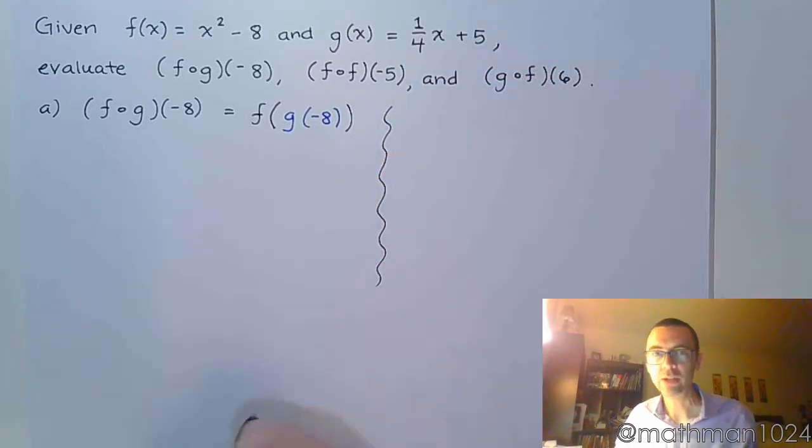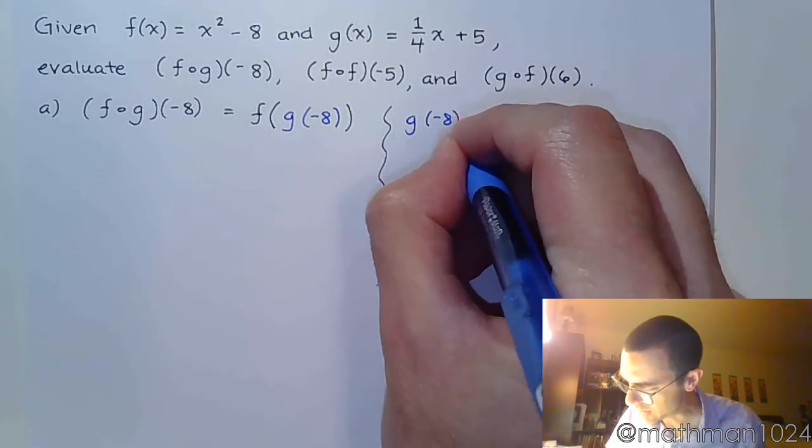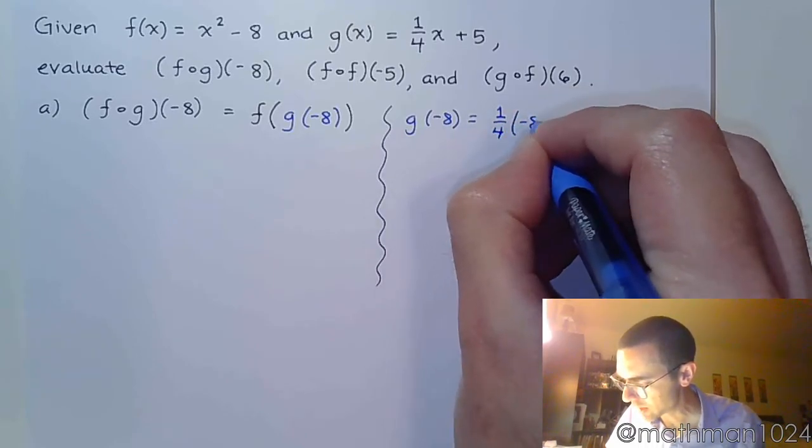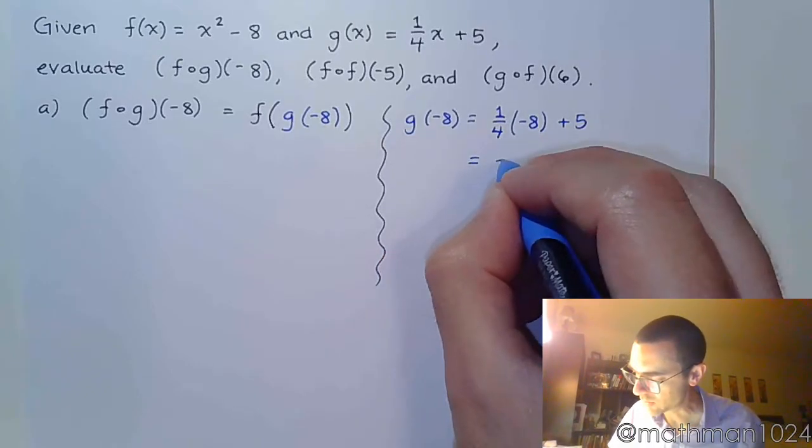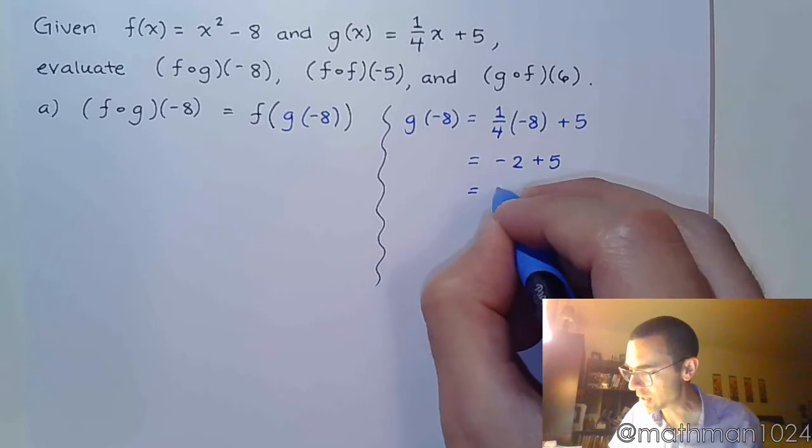And, like always, I'm going to do my scratch work over here to the side. All right, so g of negative 8 means 1 fourth times negative 8 plus 5. So that's negative 2 plus 5, which equals 3.